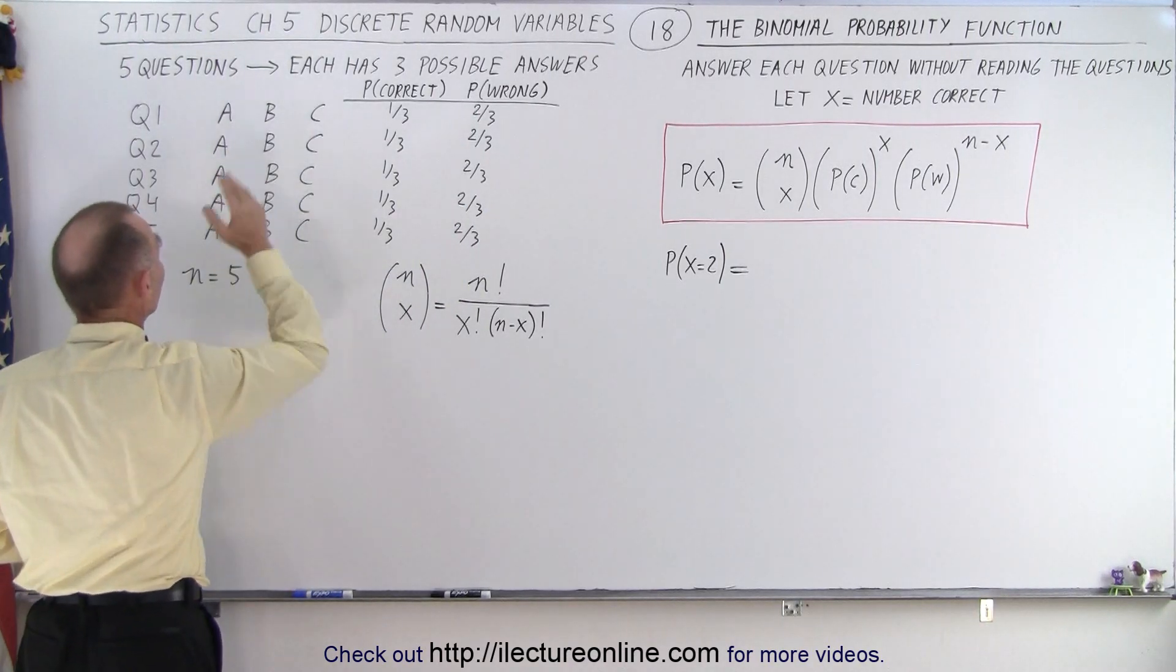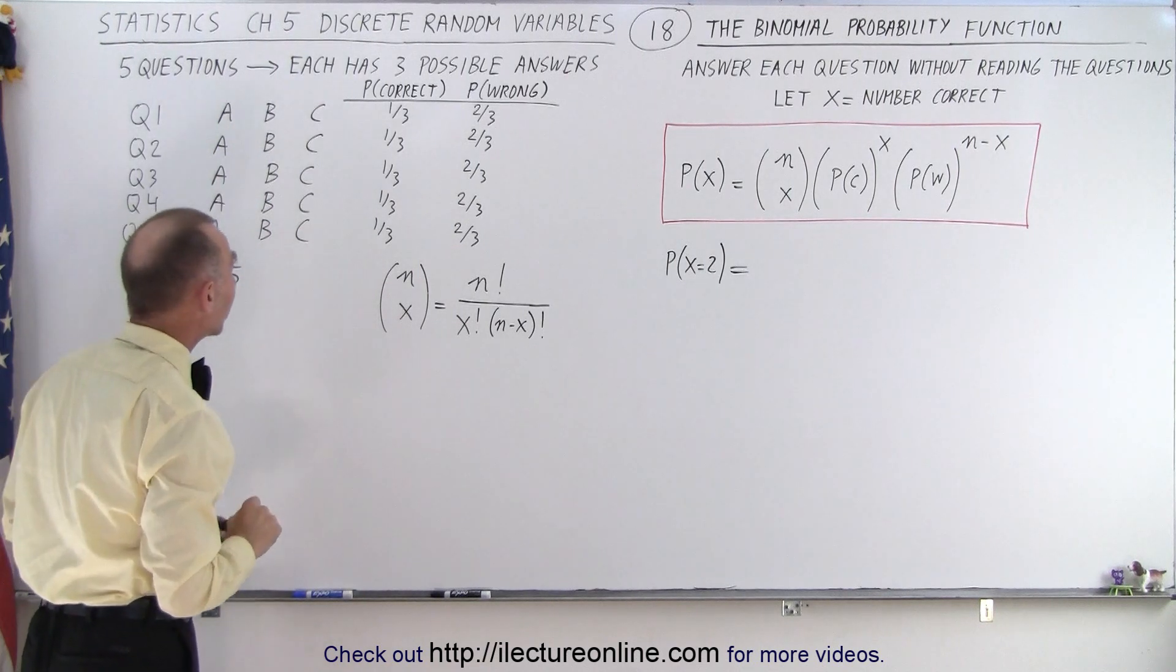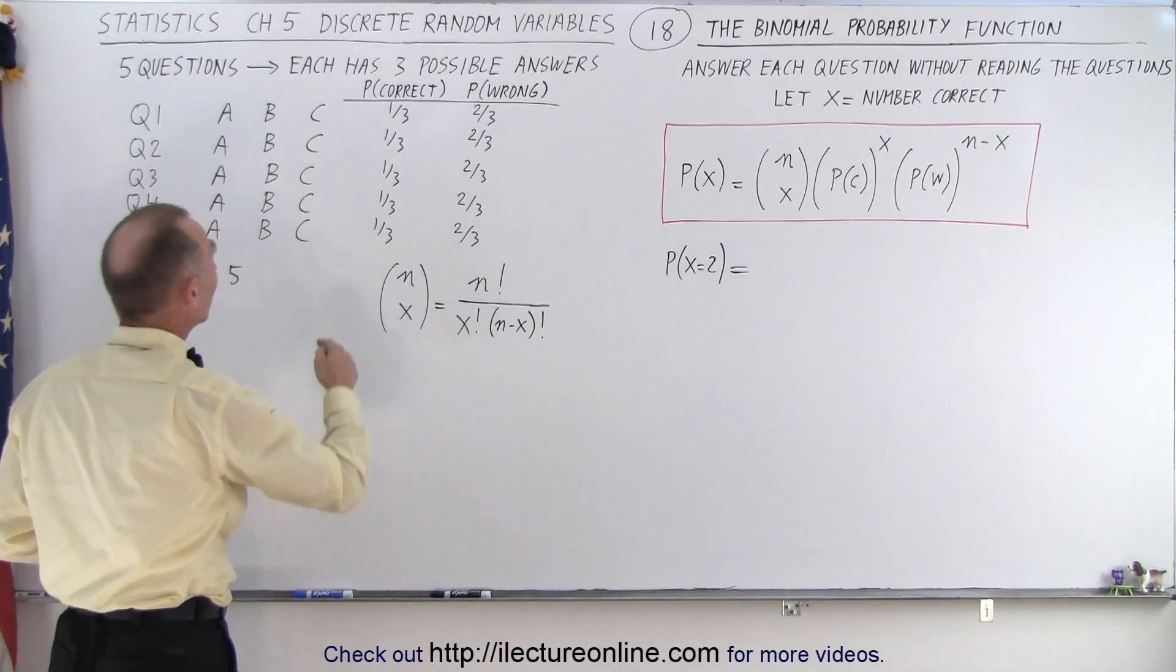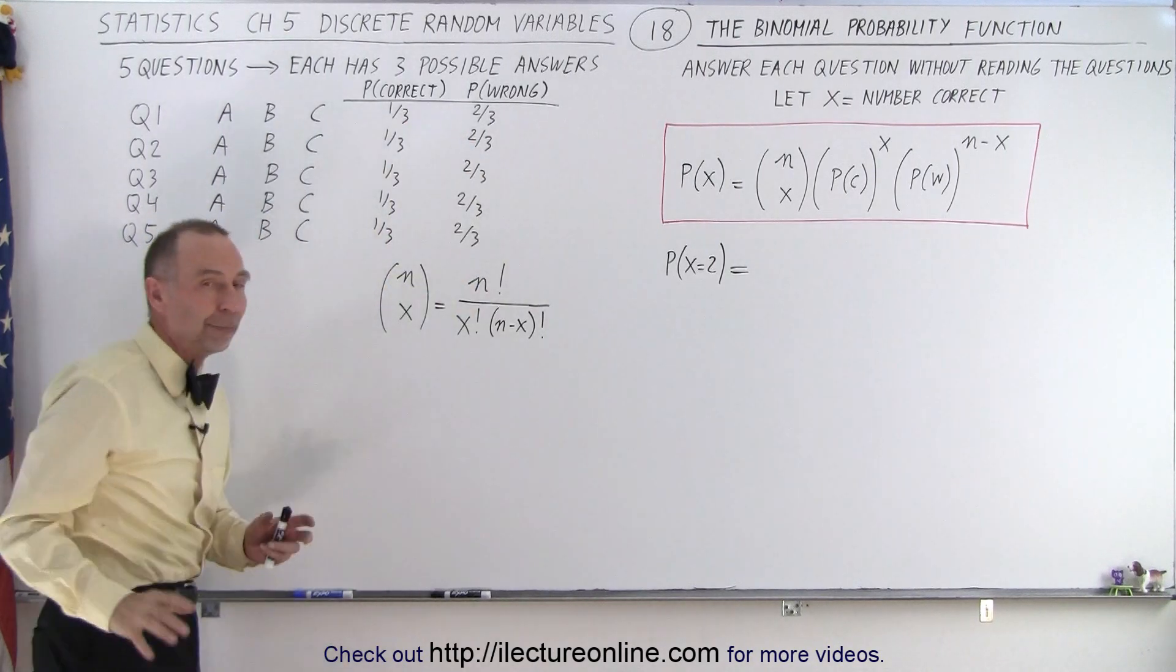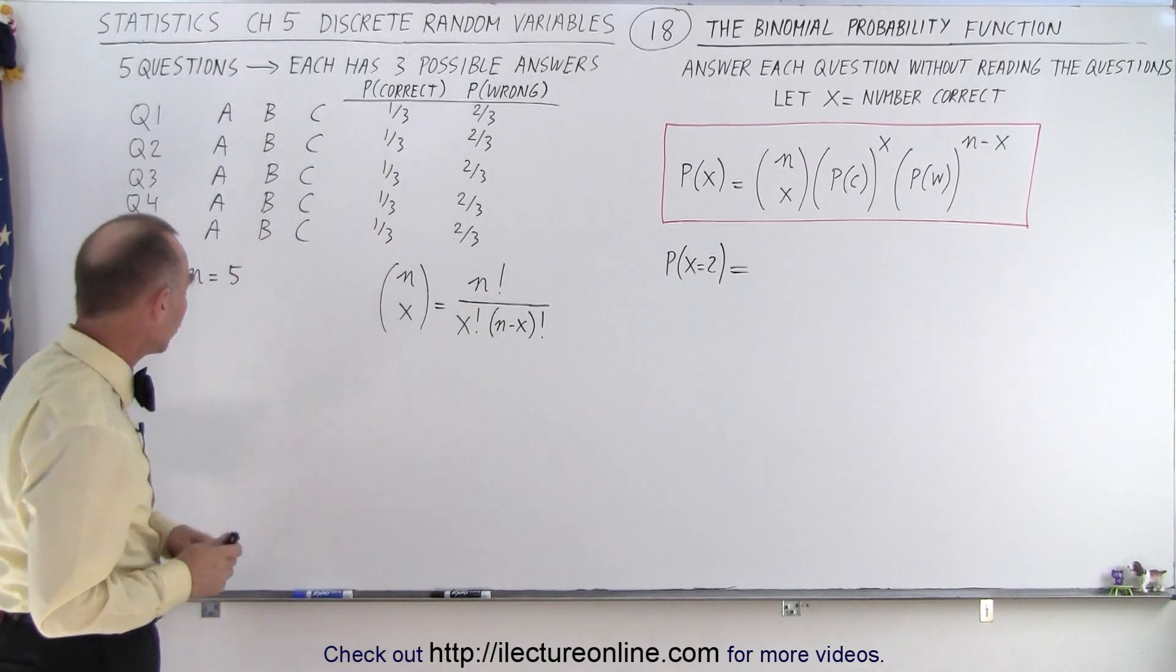Each question has three possible answers, only one of those three is correct. So therefore, in each case, we have one-third probability to get the correct answer and two-thirds probability to pick the wrong answer.